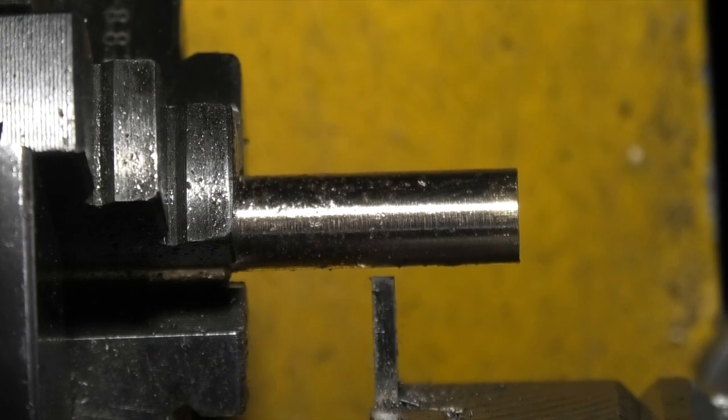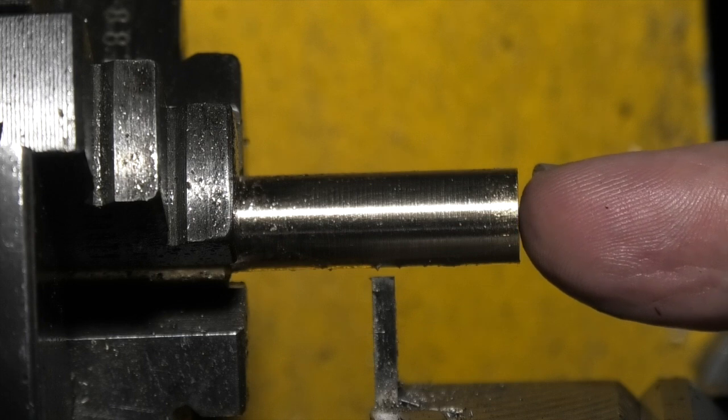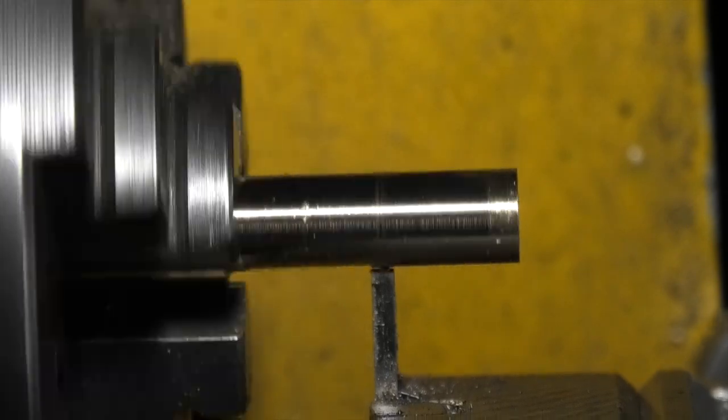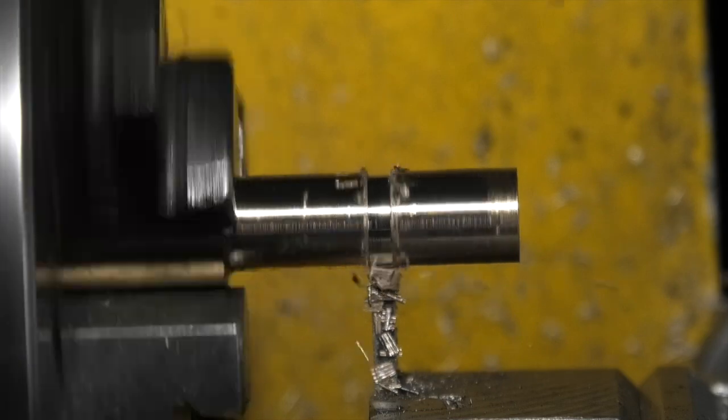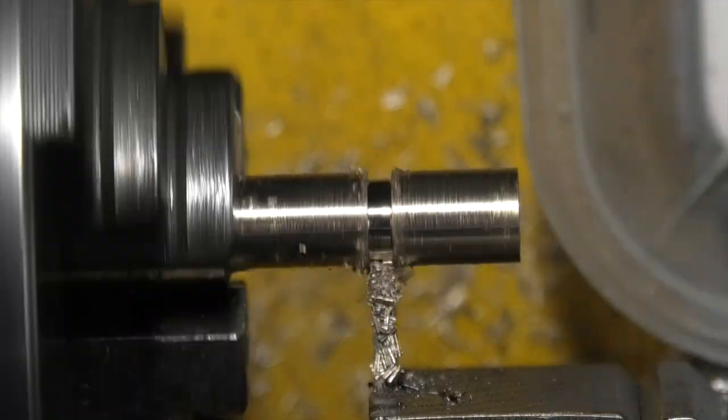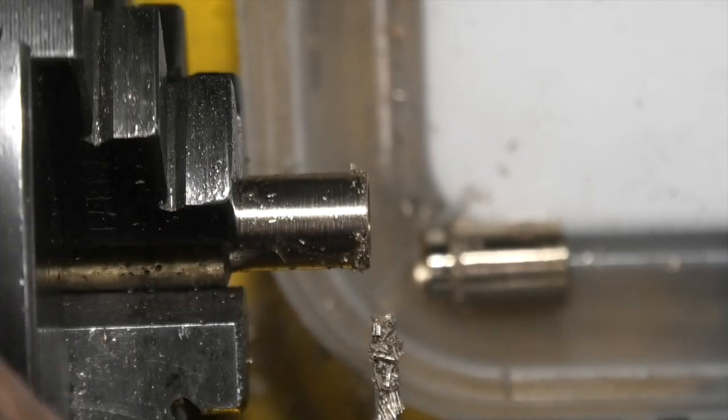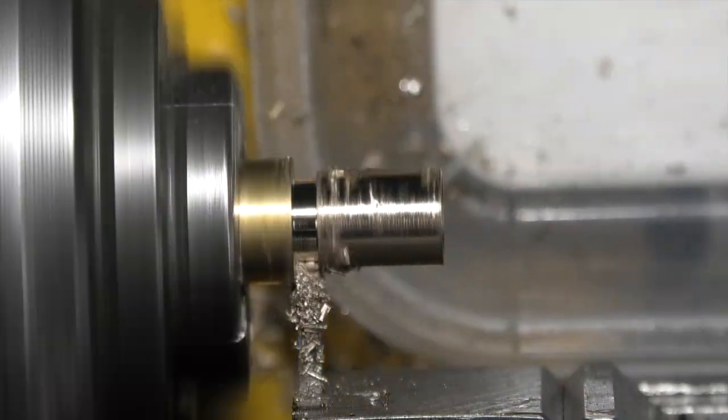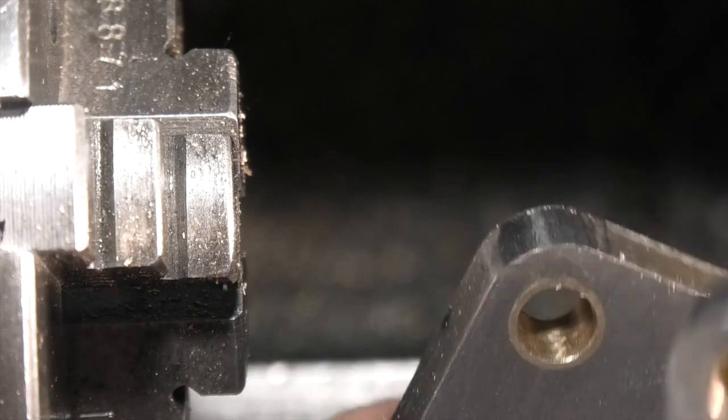I'm just making some bushes that fit in the side plates. All I've done is turn the outside down, a couple of thou over, and drill and ream the inside. It's 5.16 on the inside, 3.8 on the outside. Now I want to part this off in half inch lengths. Should get two out of this. Here are the two bushes fitted in the plates.